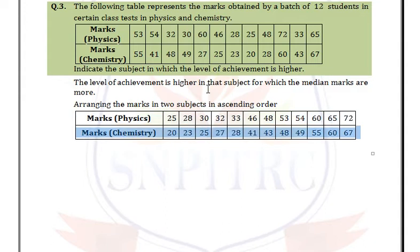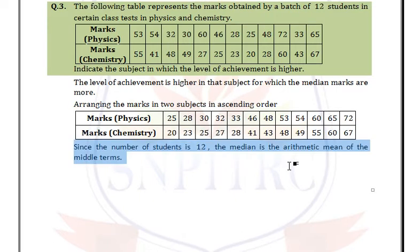The total number of observations is 12, which is even. So the median is obtained by taking the arithmetic mean of the two middle terms.